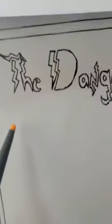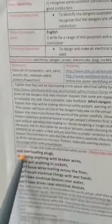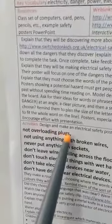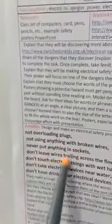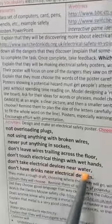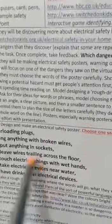We'd really like to get some great posters about the dangers of electricity, which leads on to this lesson — we're going to make an electrical safety poster. Choose one safety issue to focus on from seven different areas: not overloading plugs, not using anything with broken wires, never putting anything in sockets, not leaving wires trailing across the floor, not touching electrical things with wet hands, not taking electrical devices near water, and not having drinks near electrical devices.